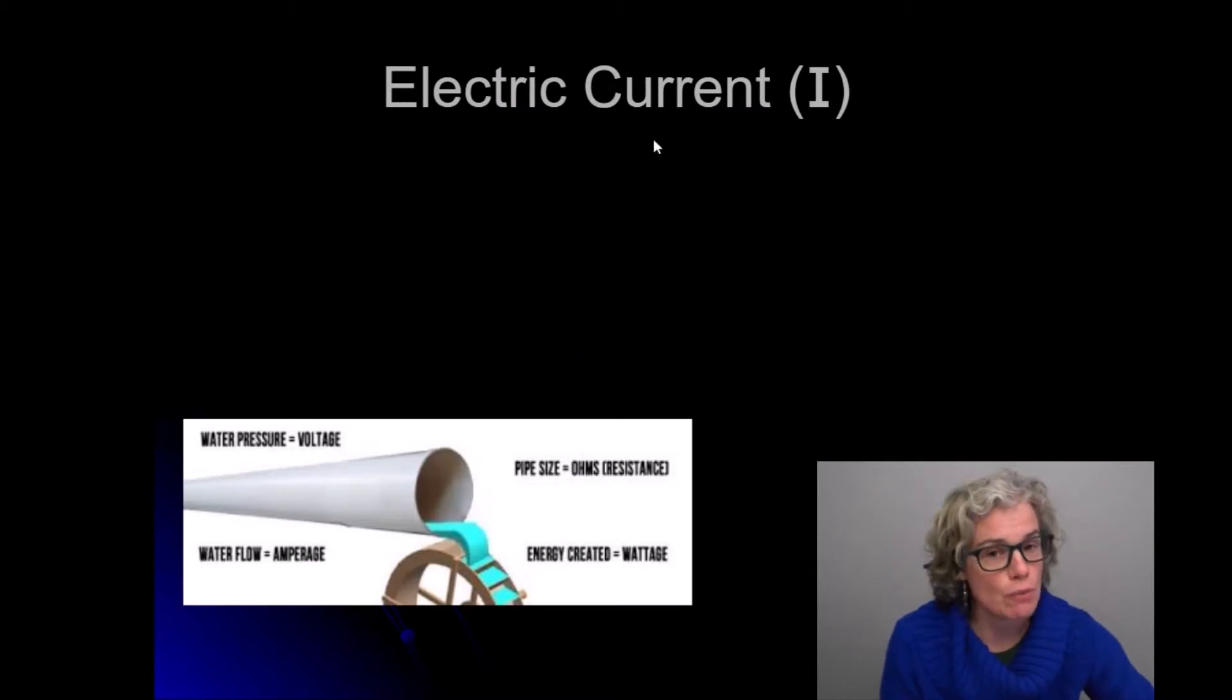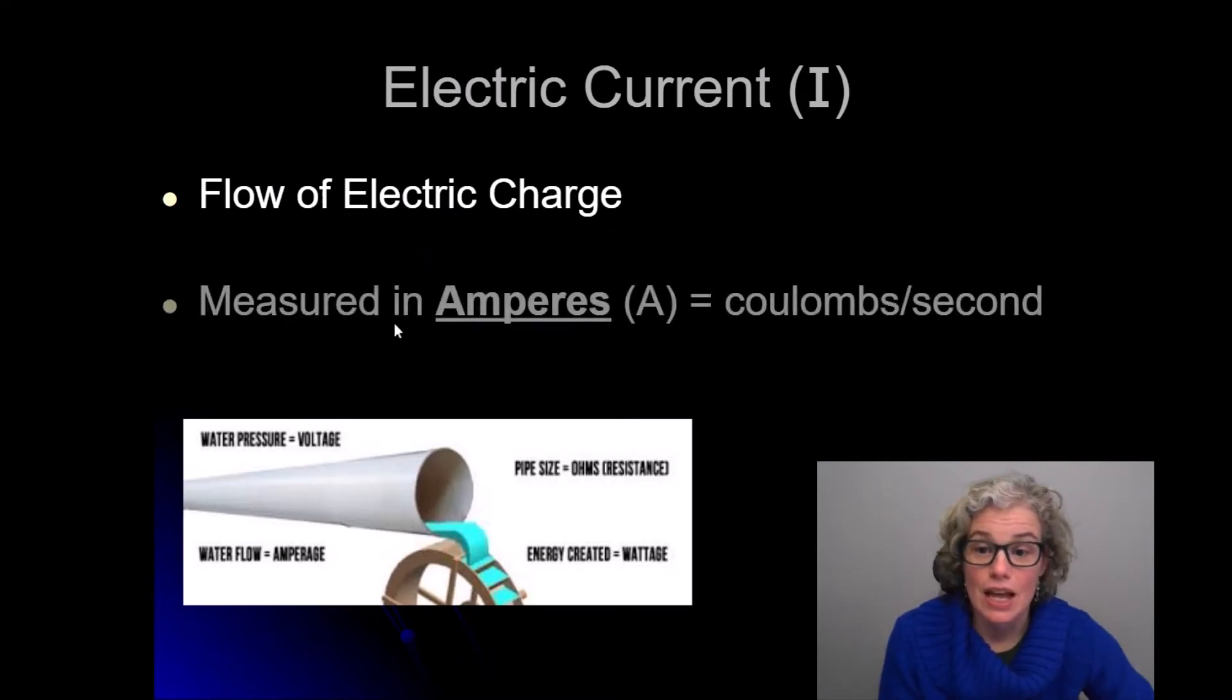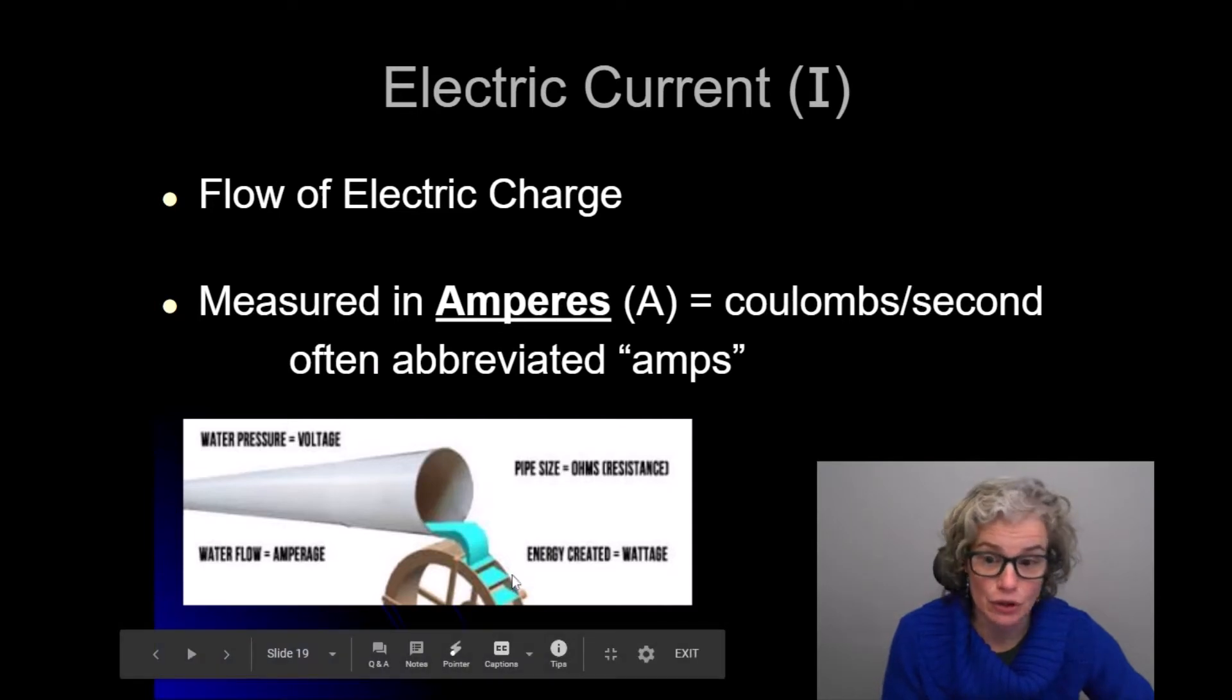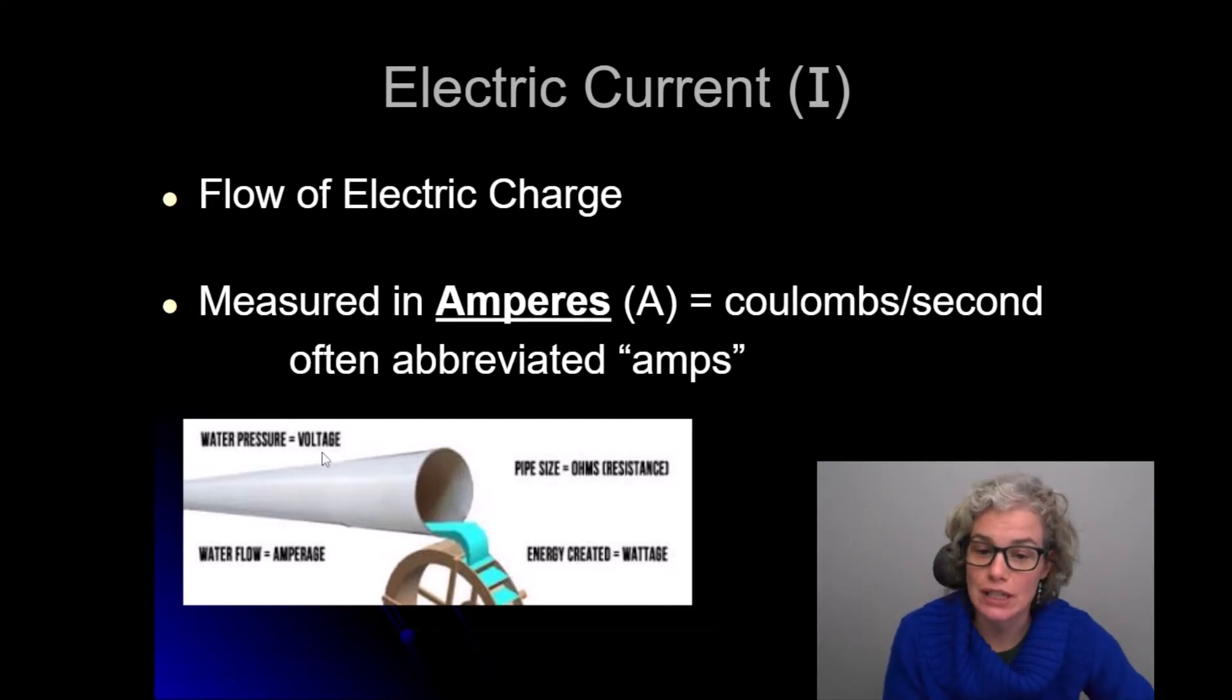Here's current. For some reason we use a capital I to abbreviate current - you're just going to have to memorize that. Current is the flow of electric charge, and we measure it in amps or coulombs per second. We often abbreviate amperes with amps because it's the more common expression. Here's another analogy: the water flow is the amps or the current, the water pressure would be like voltage, and the size of the pipe provides resistance - the narrower pipe, the higher the resistance.